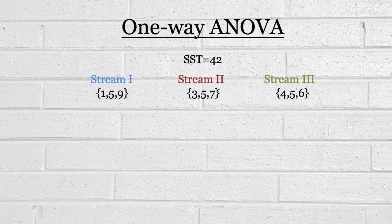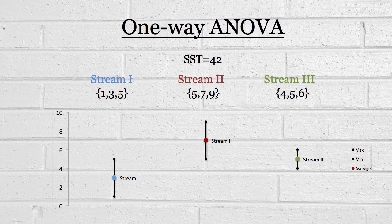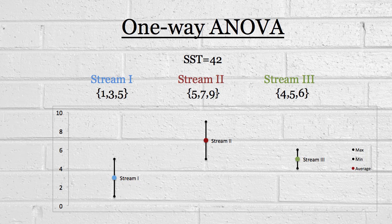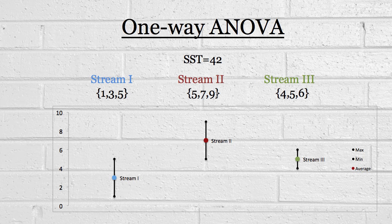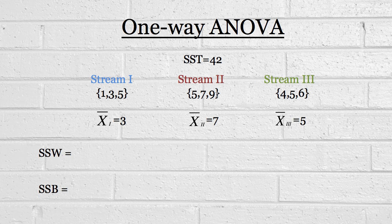So, in this next example, I'm going to change the numbers around a bit. Stream one now has one, three, five. Stream two has five, seven, nine. And stream three are left alone. And if we look at the plots again, you can see that there is a difference between the means. Now, will one way ANOVA tell us that that difference is significant? Again, it's possibly a good point for you to pause the video and see if you can do those calculations yourself.